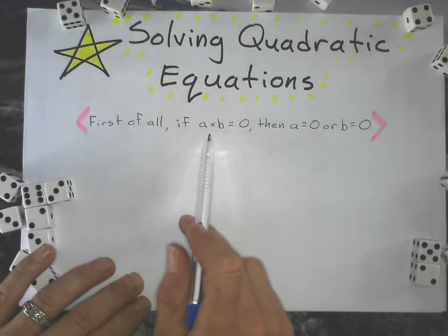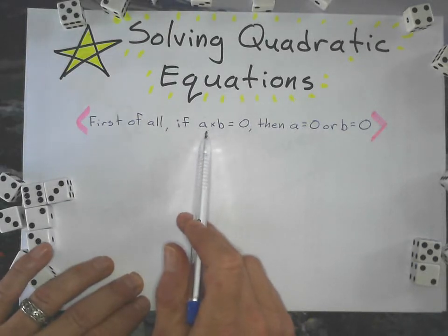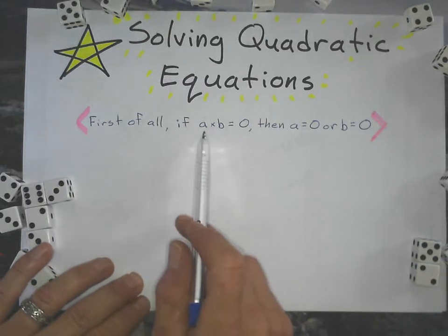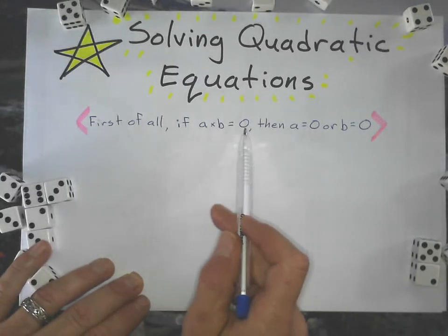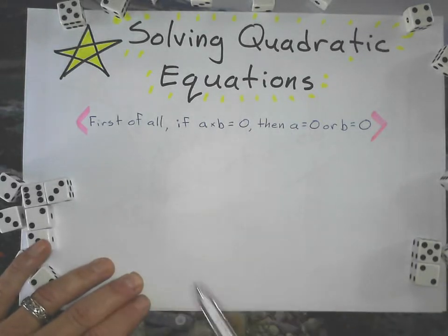That's the most important thing with solving quadratic equations. I think it's called the zero product property. Because zero times anything is zero, that means if I'm multiplying two things together and get zero, one of those factors must be zero.